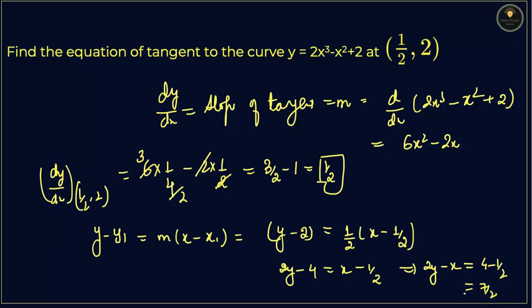So your equation of tangent will be 2y minus x equals 7/2. And that's how you have to solve the questions whenever you are getting the question in which we have to find the tangent of the curve that is given as like this.